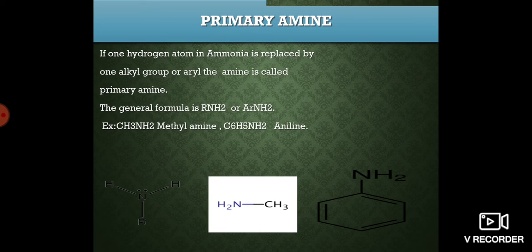The last type is quaternary ammonium salts, where nitrogen is attached to four alkyl groups, existing as a tetraalkyl ammonium cation. To neutralize this positive charge, it combines with a halide ion to form ammonium salts. The general formula is R4N+ X−.